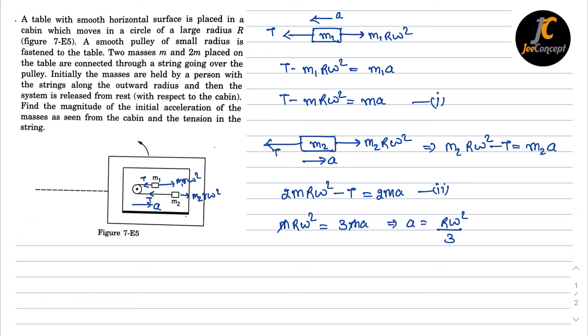Now if we have the value of A then we can put it in any equation, let's say we are putting in equation 1. So T will become M times A, that is R omega square by 3, minus, so minus minus plus M R omega square. So M R omega square will be common. So this will become 1 by 3 plus 1, that means tension in the string is going to be M R omega square into 4 by 3, that means 4M R omega square by 3. So this is the solution of this problem.